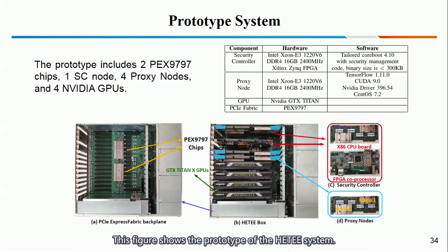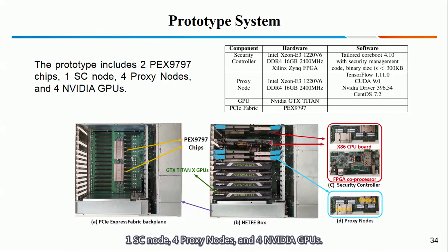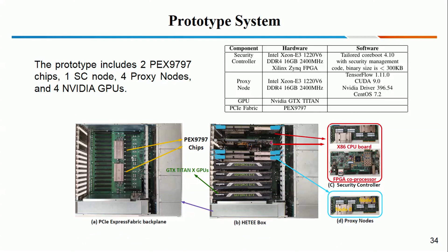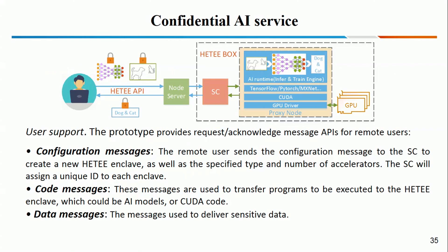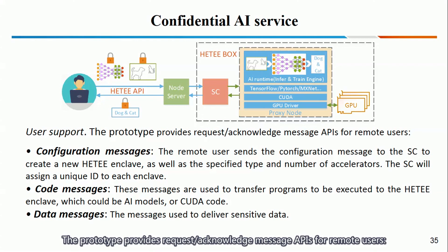This figure shows the prototype of the HDT system. The current prototype includes two PEX 97-97 chips, one SC node, four proxy nodes, and four NVIDIA GPUs. Both the SC and proxy node boards are implemented as custom boards. This figure shows the confidential AI service. The prototype provides request-acknowledge-message APIs for remote users, including configuration messages, code messages, and data messages.